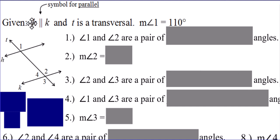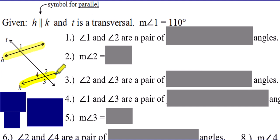Let's take a look at these directions. Given H parallel to K — these two vertical lines is the symbol for parallel — and T is the transversal. If you go ahead and look at the drawing, this is exactly what you're going to see. H and K are definitely the parallel lines, and T is that line called the transversal that intersects them. They are also telling us that the measure of angle one, this guy up here, is 110 degrees. So keep that in mind, that's going to be very useful later on.